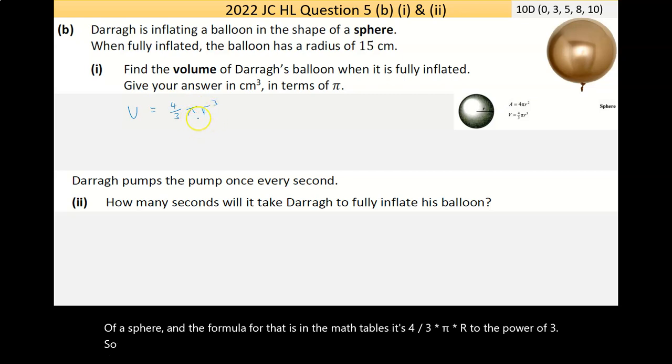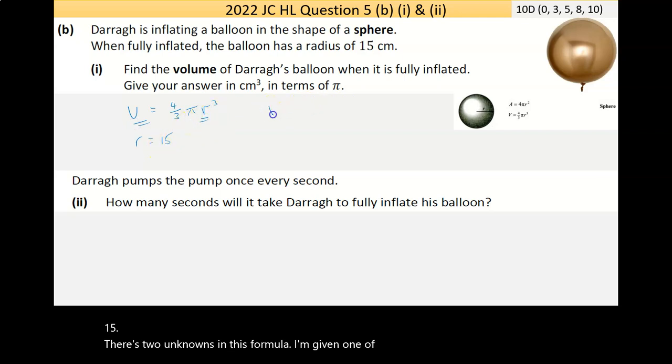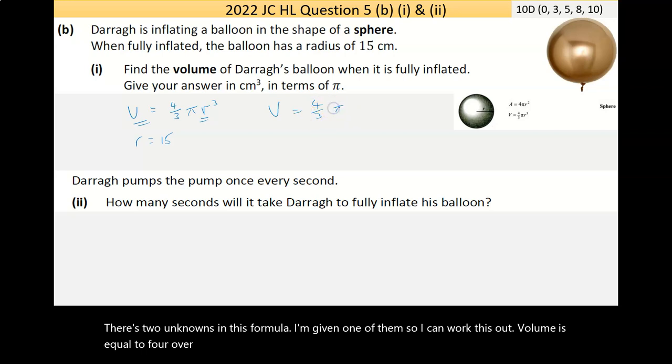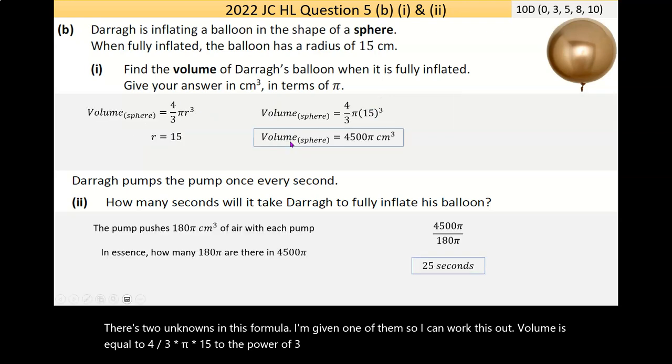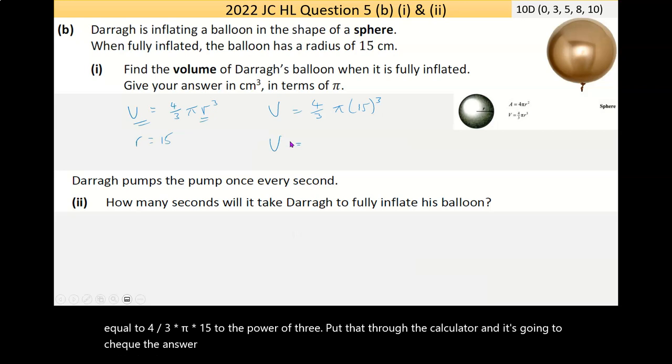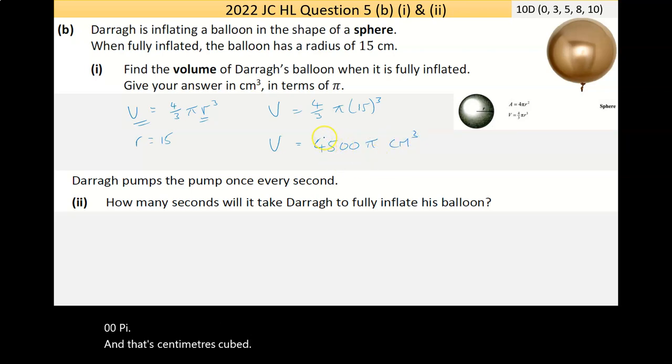This one's pretty straightforward because I know the radius. I was told directly that the radius is 15. There's two unknowns in this formula, I'm given one of them. Volume is equal to 4 over 3 times pi times 15 to the power of 3. I got 4500 pi centimeters cubed. Job done.